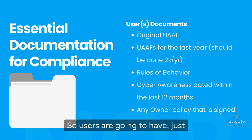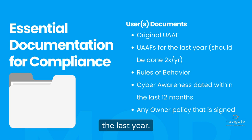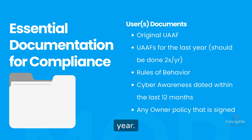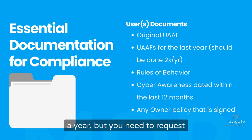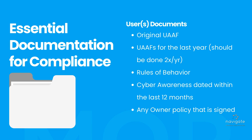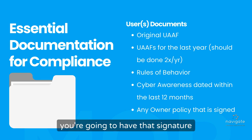Next, we're going to talk about users. Users are going to have, just like the coordinators, their original access form — it's called a UAAF in this case. They need UAAFs for the last year. One of the findings we see pretty frequently is that you're not authorizing users twice a year — it should be done twice a year. The rules of behavior and cyber awareness only need to be done once a year, but you need to request authorization twice a year. Most companies have a policy for when they do their cyber awareness and rules of behavior. Users are also going to have any owner policies that are signed, so if users sign the EIV policies, you're going to have that signature in there as well.